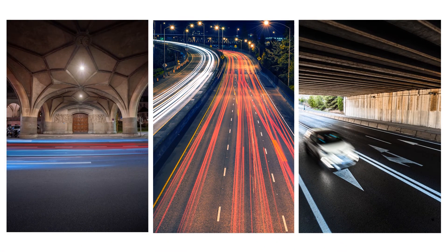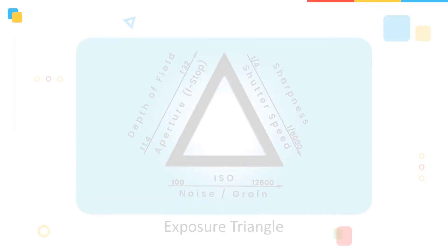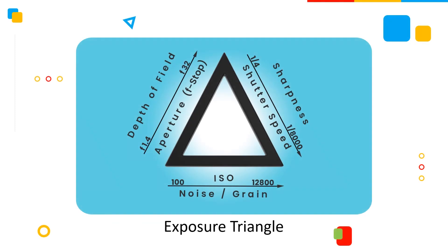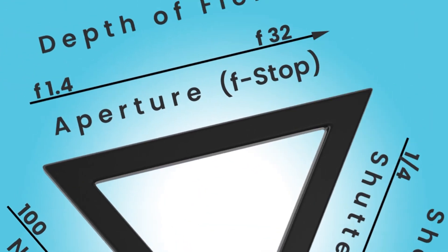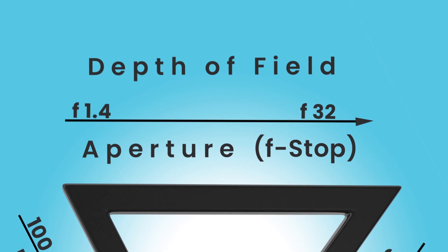So that completes our exposure triangle. I hope you have a better understanding of it now. Let's recap: ISO is used to manage light sensitivity for the image sensor and is digitally managed — lower ISO gives a cleaner image, and if we increase the ISO just to take an image, it adds noise. Aperture decides the area through which light can enter and also creates depth of field, making the background clear or blurred by increasing or decreasing the f-stop value.